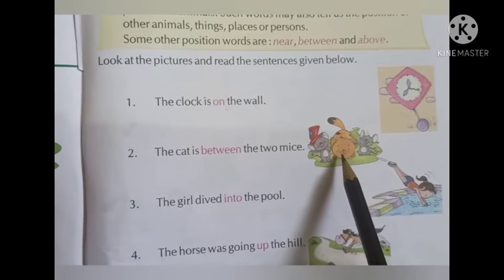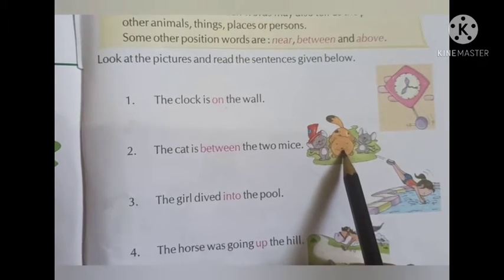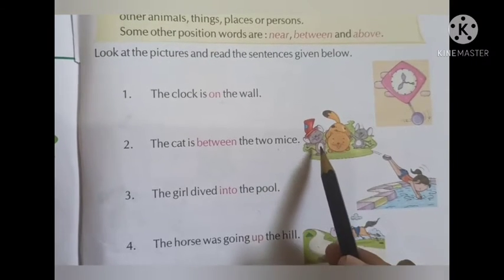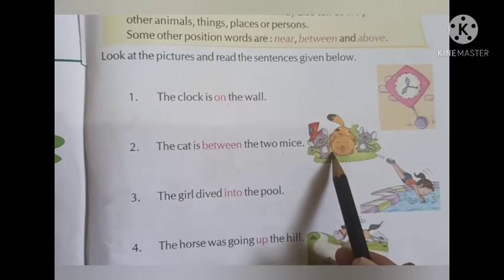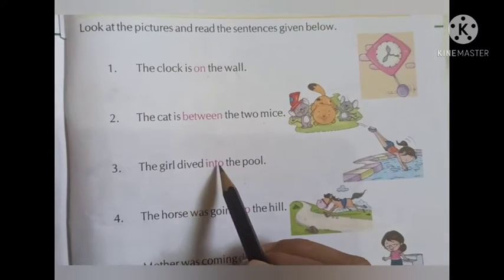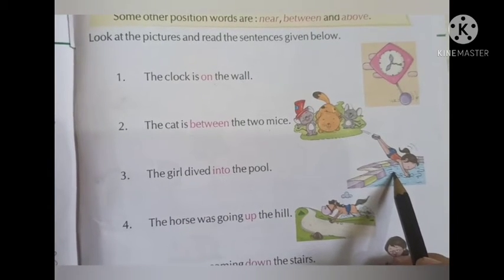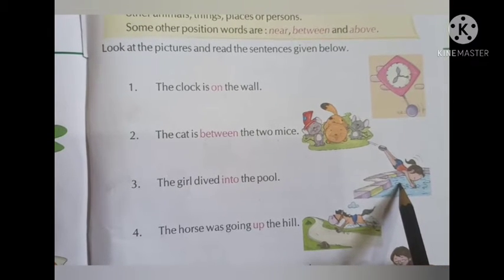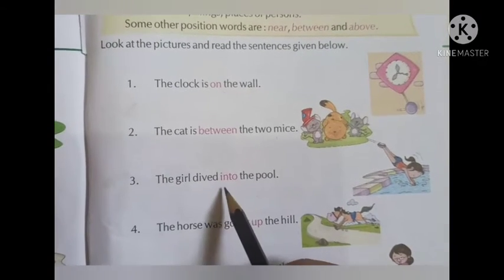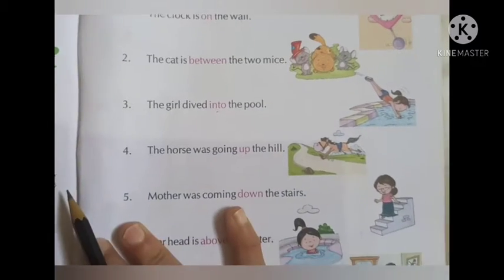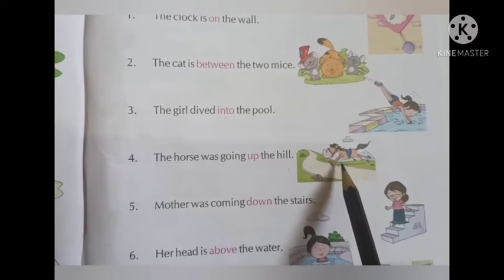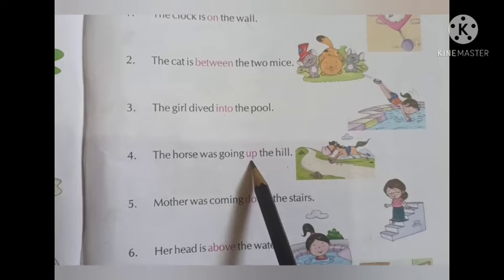In the next picture you can see two rats and a cat. The sentence says the cat is between the two mice — it is standing in between the two mice on both sides. The third one: the girl dived into the pool. Dived means when you jump for swimming. The preposition here is into. Next, the horse was going up the hill — the preposition here is up.